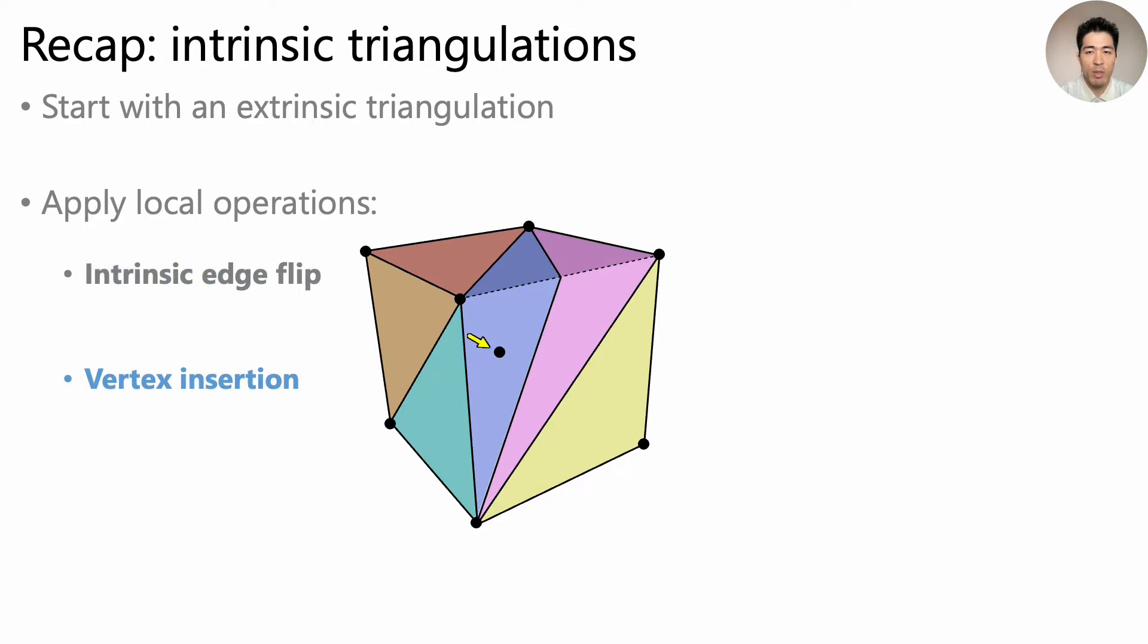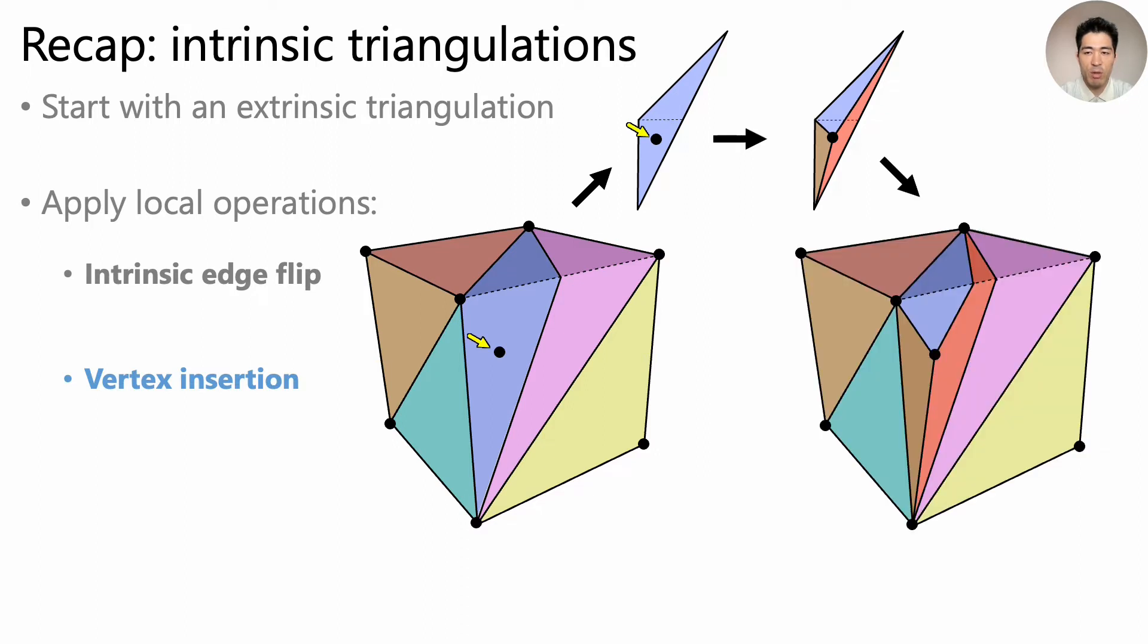Another basic operation is vertex insertion. For example, if we are to insert a vertex to this triangle, we first flatten it to 2D, then insert the vertex in 2D, splitting the triangle into 3. These new triangles are then mapped back to the surface in 3D.